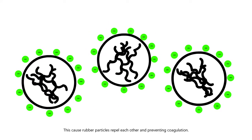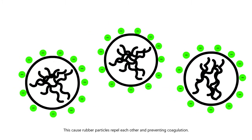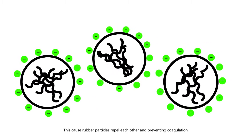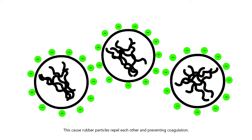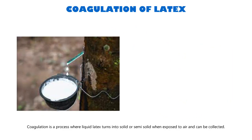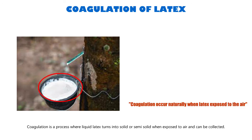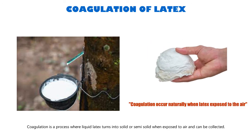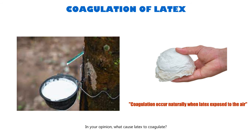This causes rubber particles to repel each other, preventing coagulation. Coagulation is a process where liquid latex turns into solid or semi-solid when exposed to air and can be collected. In your opinion, what causes latex to coagulate? Let's find out together.